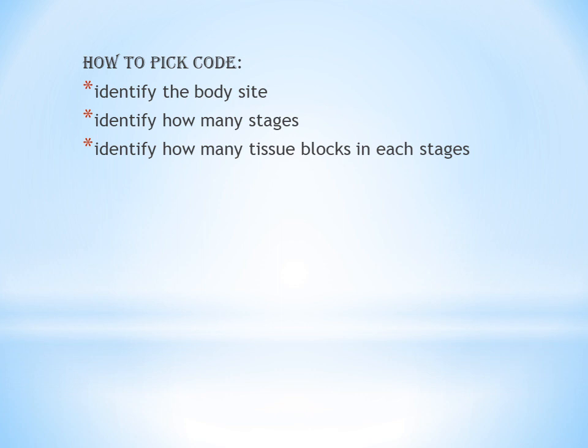Second, identify how many stages there are — stage 1, 2, 3, 4, and so on. Third, identify how many tissue blocks are in each stage. One important point to keep in mind: up to 5 tissue blocks is included in one stage code. If there are more than 5 tissue blocks, all remaining blocks above 5 are counted separately and have separate codes.